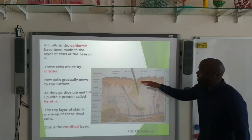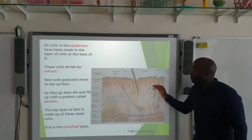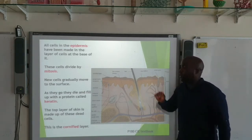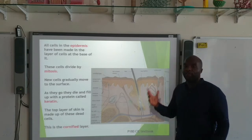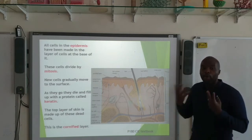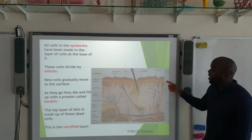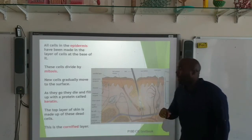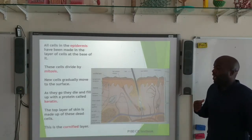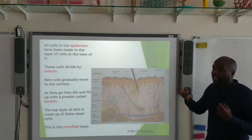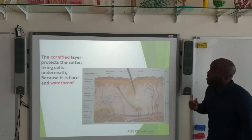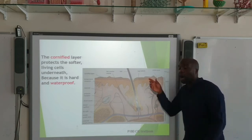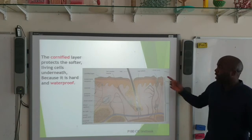All the cells in the epidermis have been made in the base just below the epidermis. These cells divide by mitosis and gradually move up to the surface. As they get closer and closer to the surface, eventually they die. When they die, they fill with a protein known as keratin. These dead cells, which are full of the protein keratin, form the top layer known as the cornified layer. The cornified layer is important because it protects the living cells underneath — it's hard and also waterproof.